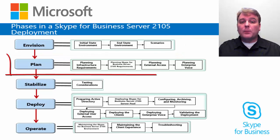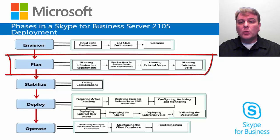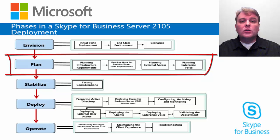Next is the planning phase. During planning, you need to plan for infrastructure requirements and for any dependencies related to the basic requirements for Skype for Business Server. Based on these decisions, your plan will further evolve to include external user access and voice requirements. Decisions on external user access and voice requirements depend on the phasing decisions made in the envisioning phase.